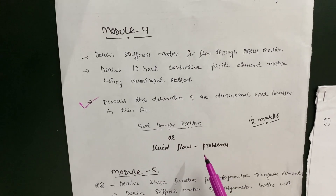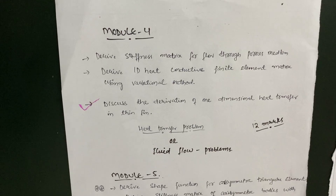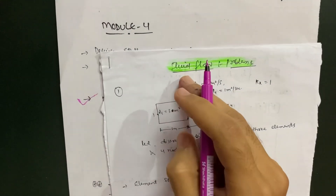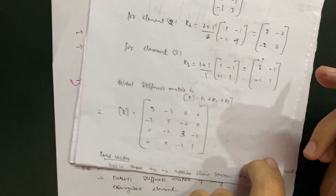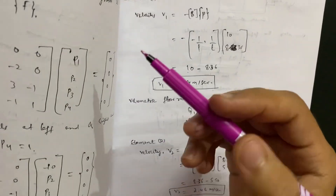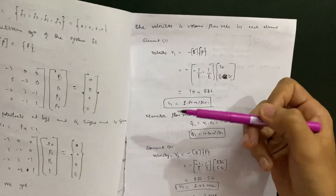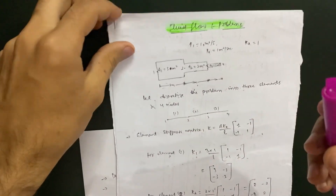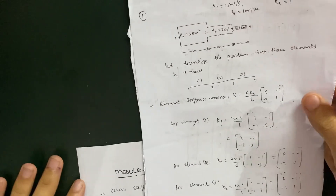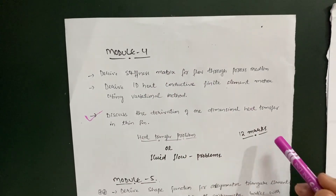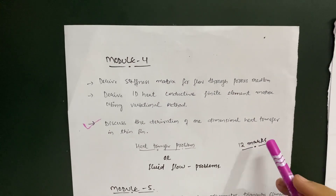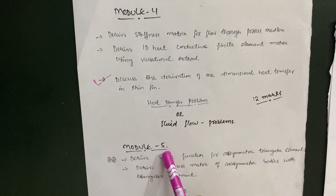I will show you the interface of fluid flow problems. The procedure involves setting up the stiffness matrix and global stiffness matrix, then calculating the velocity and volumetric flow rate. These are simple problems. In the OR part of Module 4, you have the option of fluid flow problems. If heat transfer problems are not convenient for you, go through fluid flow problems instead. You can easily get 12 marks, and if you want to score fully, you can get 20 marks as well.